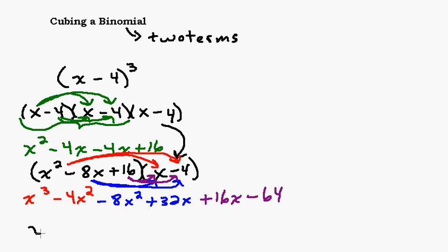We've got our x to the third power. No more x to the third, so that's taken care of. Now we go to our x squared terms: negative 4x squared and negative 8x squared gives us negative 12x squared. Then we do our x terms: positive 32x and positive 16x gives us positive 48x.